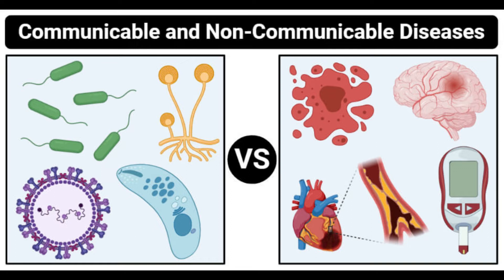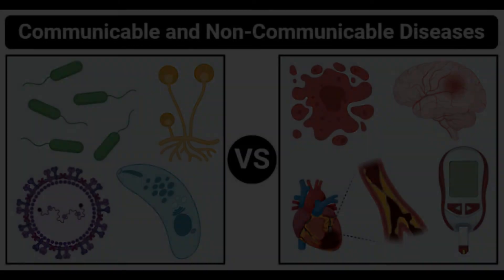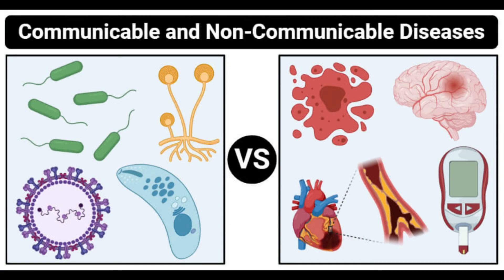Regarding progression, communicable diseases are more likely to be acute, meaning they appear quickly. Non-communicable diseases are more likely to be chronic, meaning they last for a longer period of time and progress gradually. Regarding seasonality, some infectious diseases might be seasonal, while non-communicable diseases are not seasonal and might occur at any time of the year.